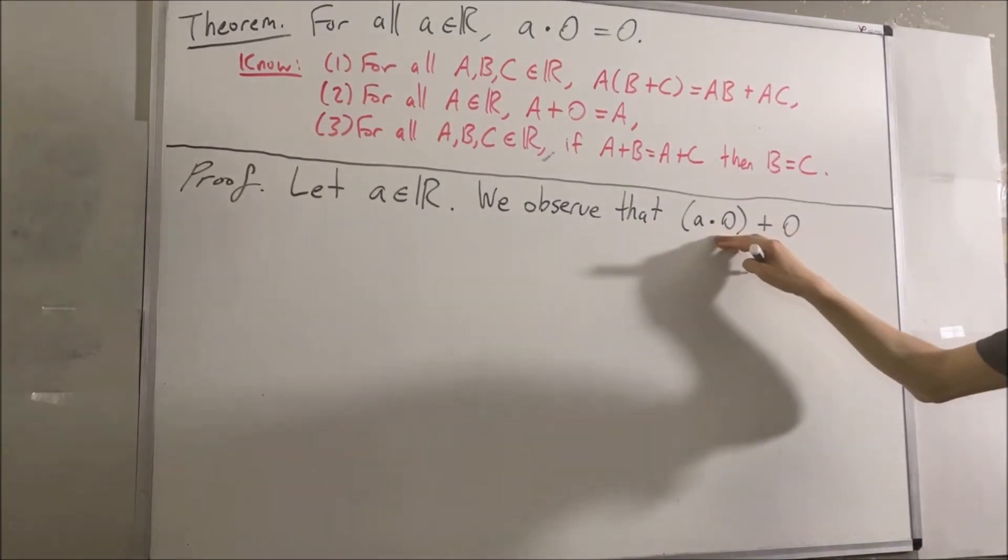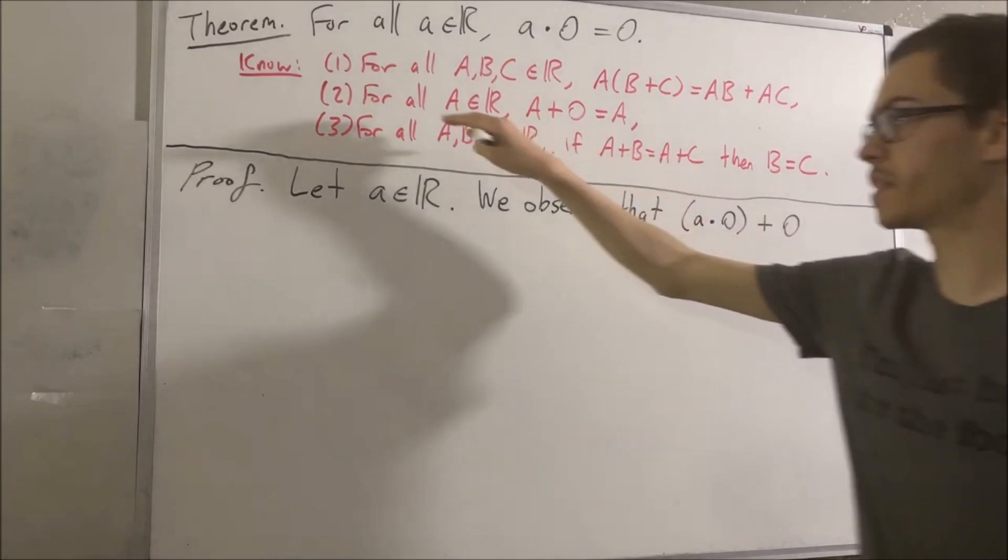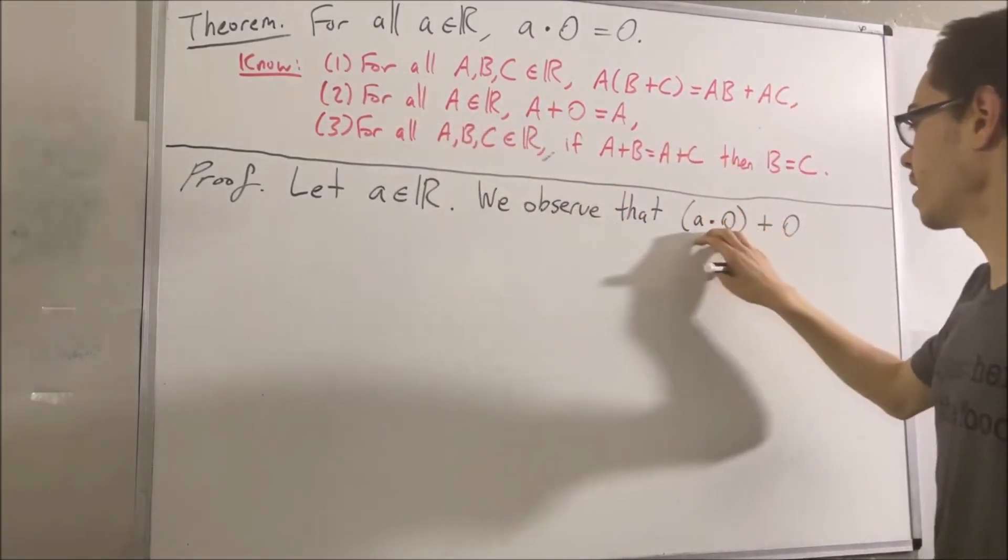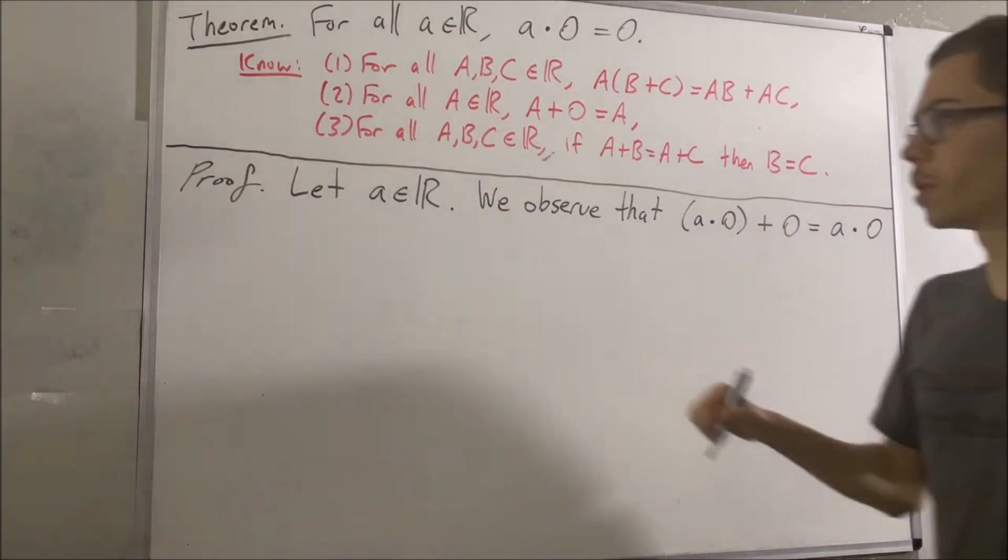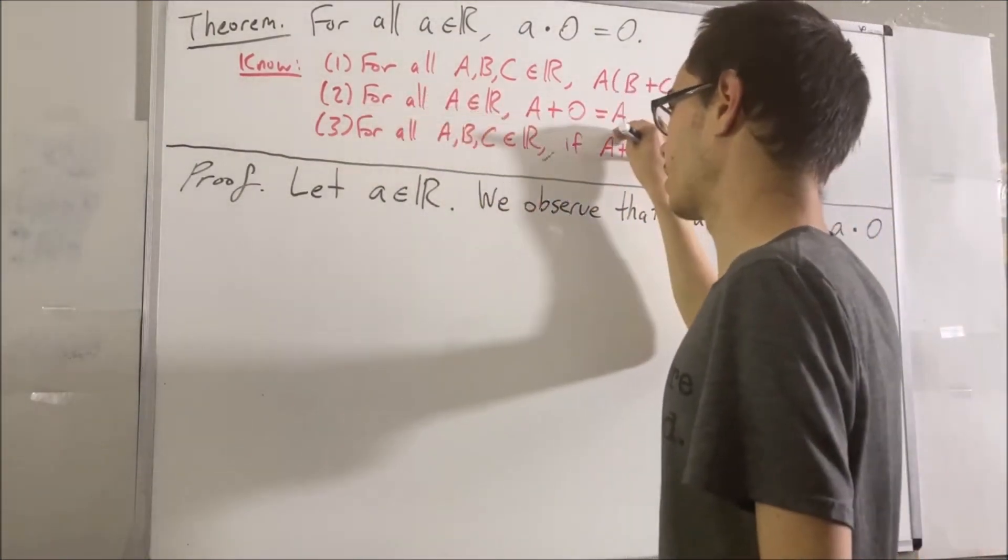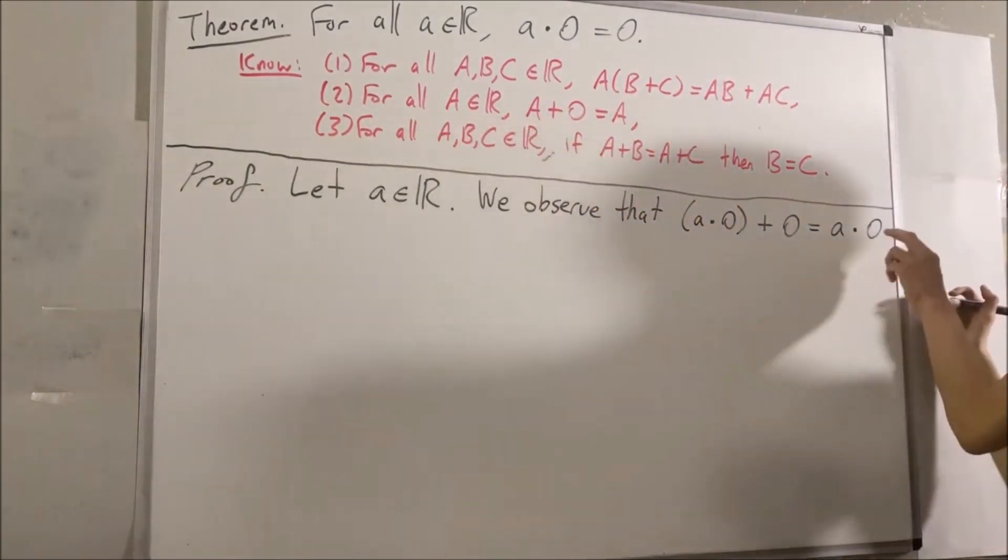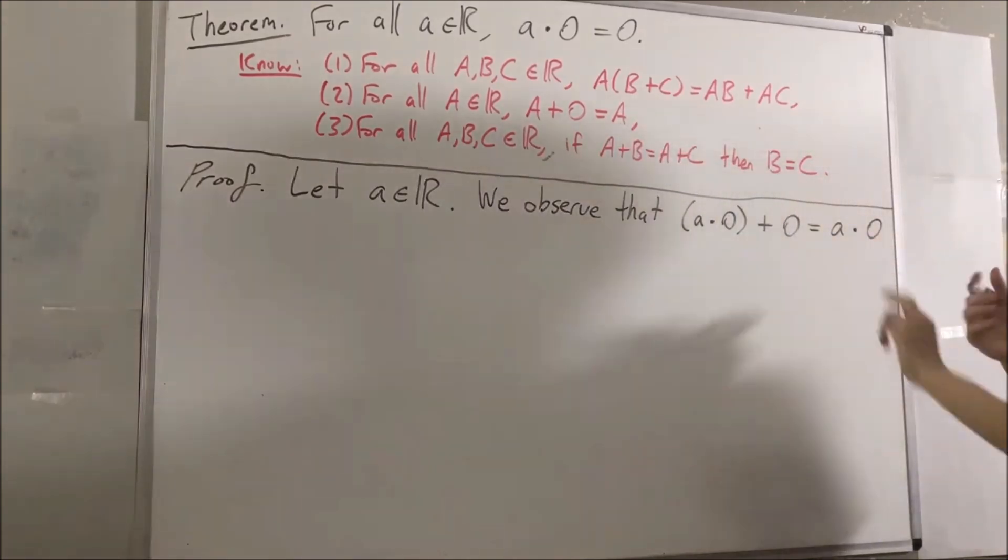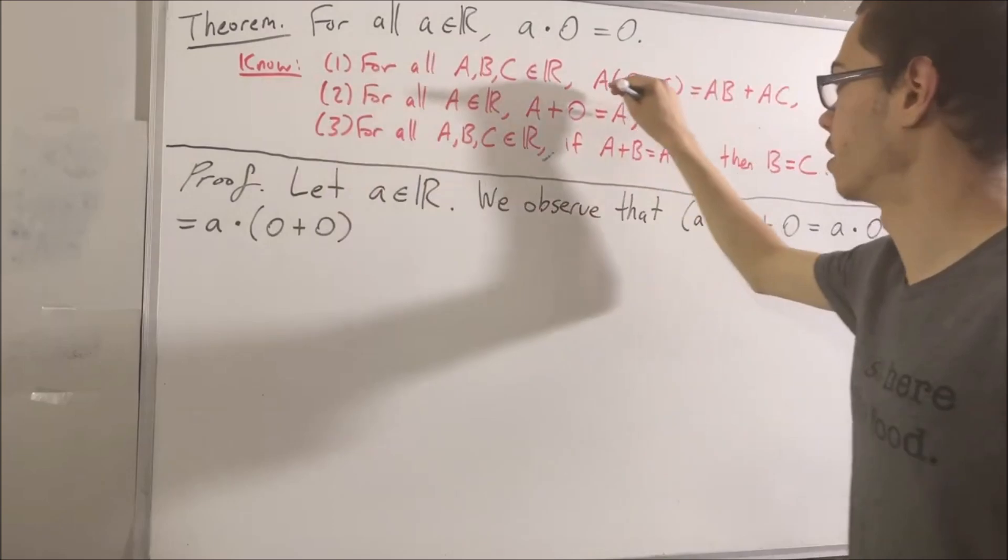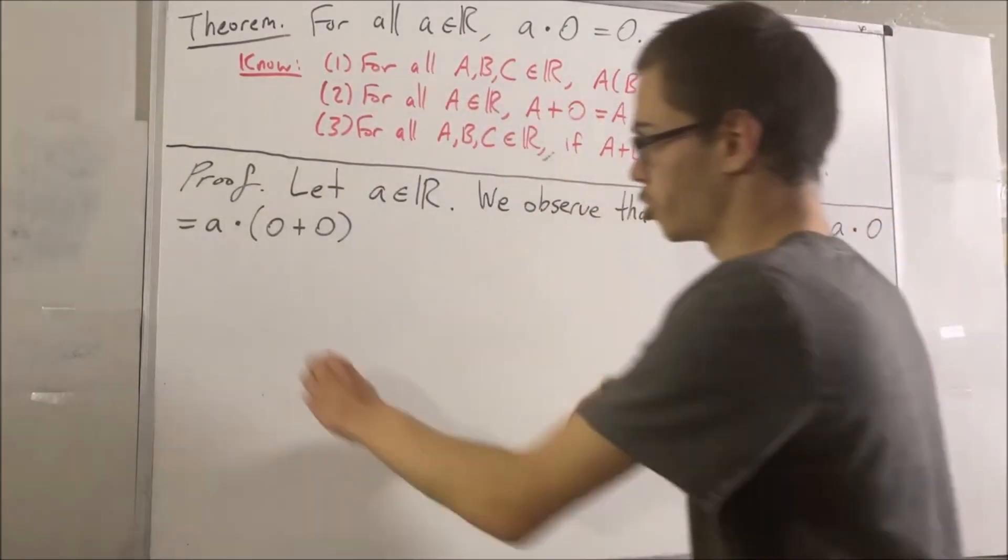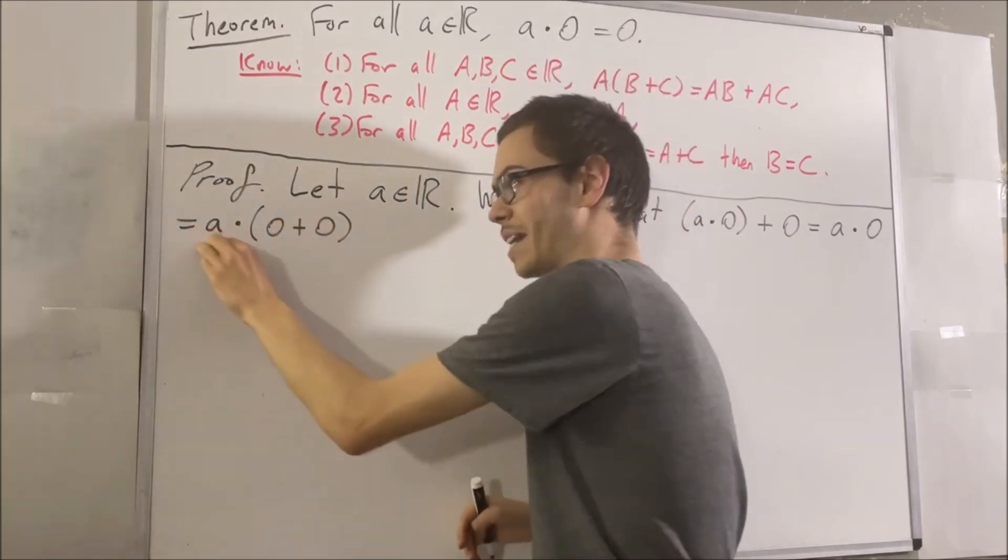If we compute a times zero plus zero, well, we know from this second fact that a times zero plus zero is equal to a times zero. But also from this second fact, we have that zero plus zero is equal to zero. So we can replace the zero here with zero plus zero. And now, applying the first fact, the distributive law, we can distribute the a across. And we get that this is equal to a times zero plus a times zero.